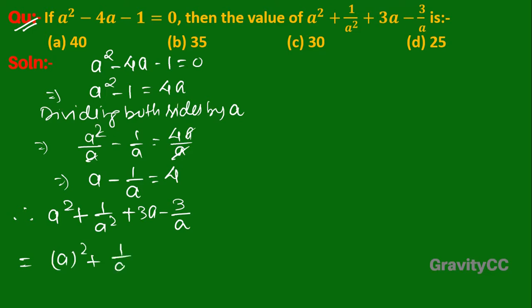This equals (a - 1/a)² + (1/a)² and we can factor out 3 from the remaining terms.